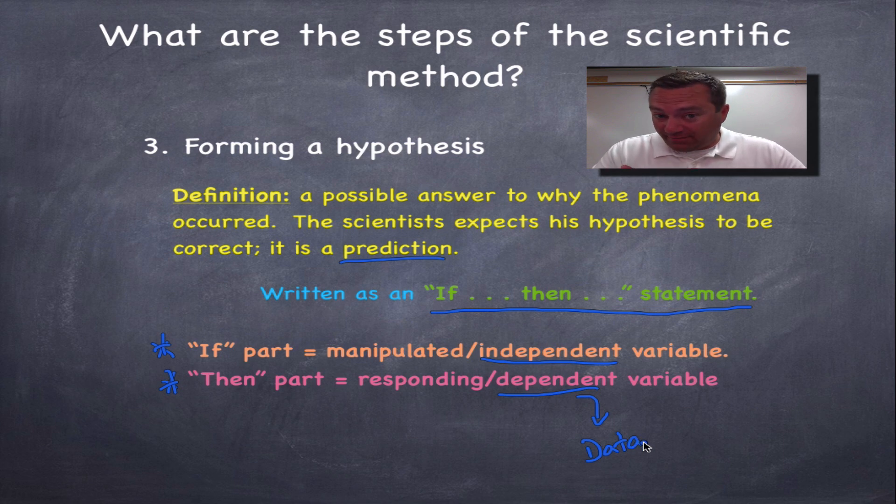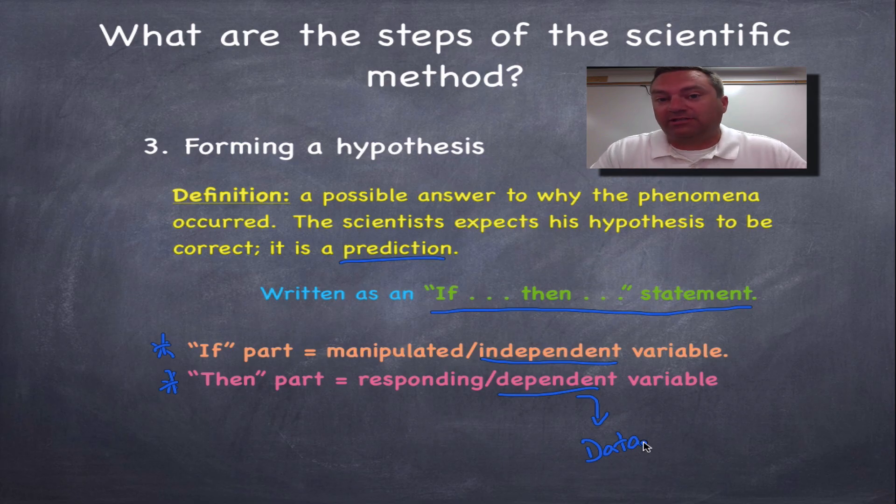The dependent variable or the responding variable is going to create the data. So when you think of responding or dependent variable, I want you to think of data. These are the actual changes that you're going to see. So independent variable, that's the variable that you're actually testing. The dependent variable depends on the independent variable, and it's going to create the data. So think of dependent variable as your data.